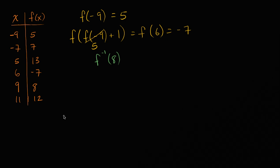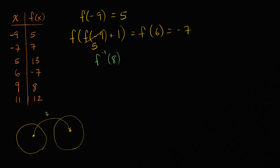f of x, as a reminder of what functions do, is going to map from a value in its domain to a corresponding value in the range. So this is domain, and this right over here is going to be the range. Now, f inverse, if you pass it a value in the range, it'll map it back to the corresponding value in the domain.